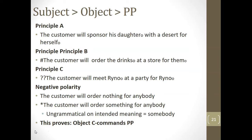Using negative polarity: 'The customer will order nothing for anybody' is grammatical — 'nothing' (direct object) licenses the negative polarity item 'anybody' (object of the preposition), showing the direct object C-commands the object of the preposition. Creating a minimal pair: 'The customer will order something for anybody' has a meaning, but it's not the negative polarity reading — 'anybody' here means something like 'any person in the room,' which is quite different. Again, this shows the object C-commands the prepositional phrase.